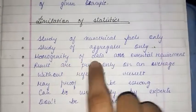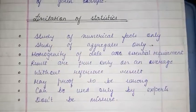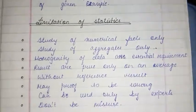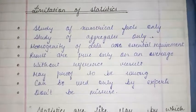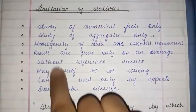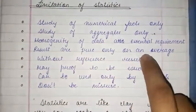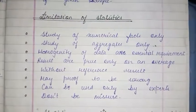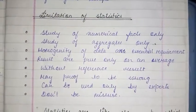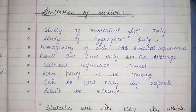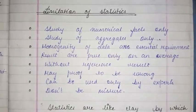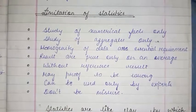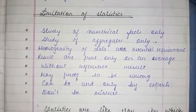The second limitation is the study of aggregates. Statistics does not deal with single observations. The third limitation is that homogeneity of data is an essential requirement. All data must be comparable — for example, we cannot combine population figures with education data.